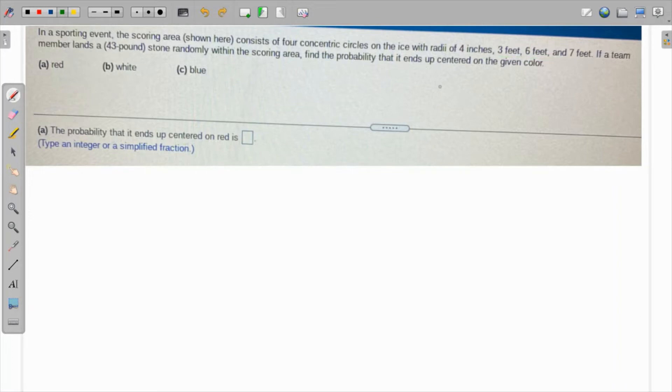If a team member lands a 43 pound stone randomly within the scoring area, what is the probability that it will end up centered on the given color: red, white, and blue?